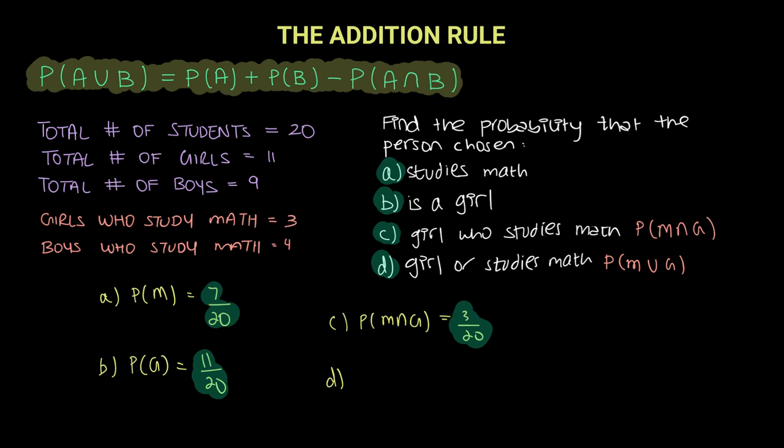So what does the addition rule say? The probability you need to find that the student studies math or is a girl, which means probability of getting a math student or—which means plus—a girl, but you have to minus the intersection because that is what the addition rule says.